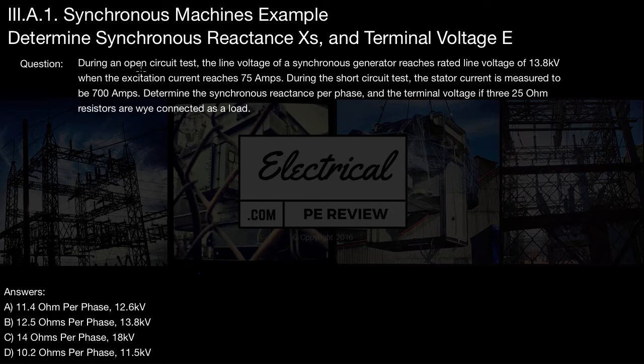The problem states: during an open circuit test, the line voltage of a synchronous generator reaches rated line voltage of 13.8 kV when the excitation current reaches 75 amps.